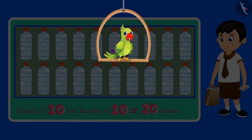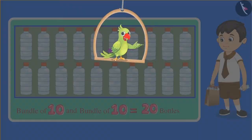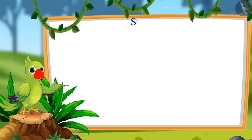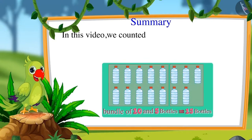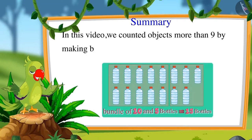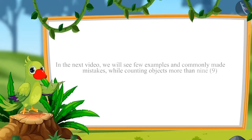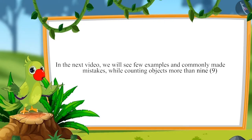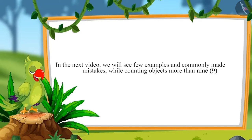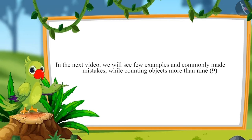Did you understand? Similarly, by making bundles of 10, we can count up to any number between 9 and 20. In this video we counted objects more than 9 by making bundles of 10. In the next video we will see a few more examples and the commonly made mistakes to avoid while counting objects more than 9. Till then, bye friends!